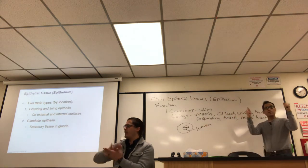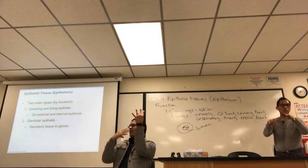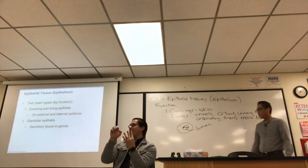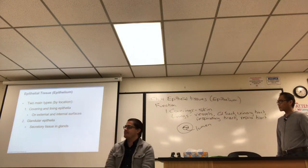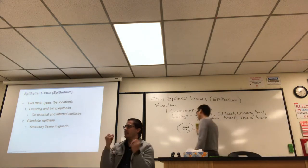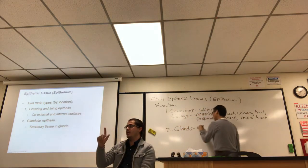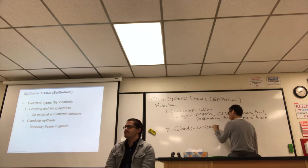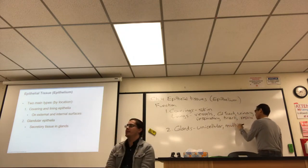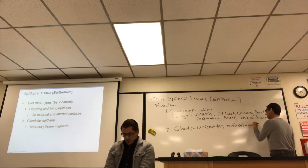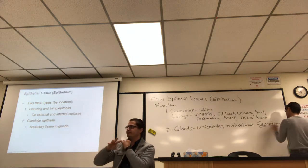If you poked holes in paper and held it up to light shining through, that illumination through holes gives us the word 'lumen.' So in anatomy a hole is called a lumen, and the lumen has a lining. Coverings and linings serve many functions. The other major function of epithelial tissue is glands — unicellular and multicellular — whose function is secretion.